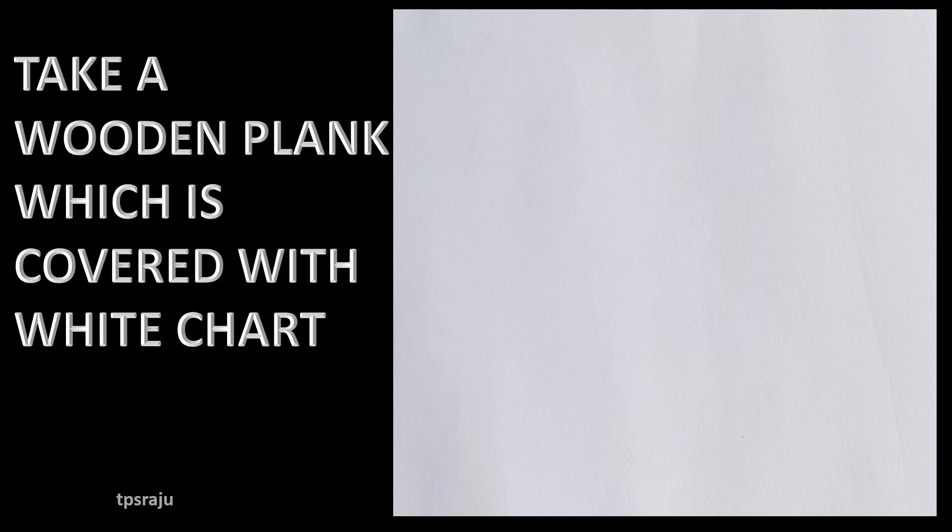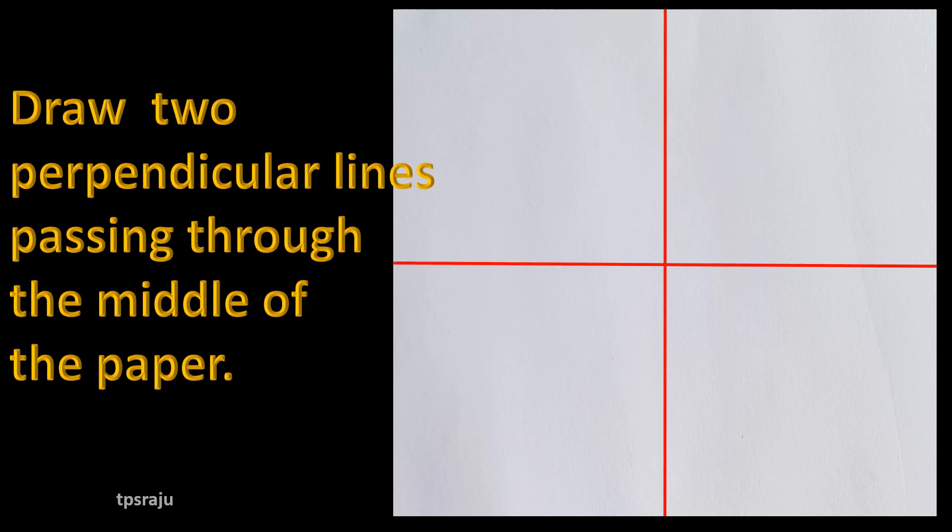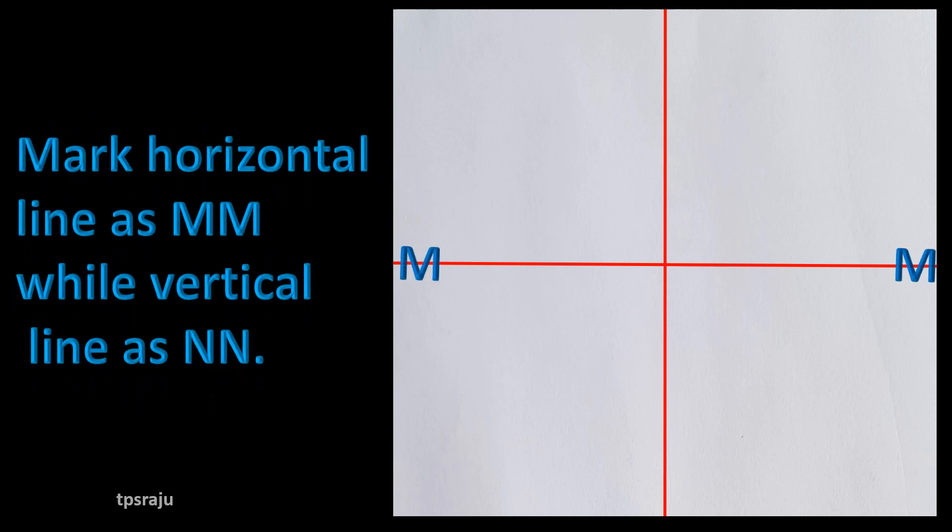Take a wooden plank which is covered with white chart. Draw two perpendicular lines passing through the middle of the paper. Mark horizontal line as MM while vertical line as NN.